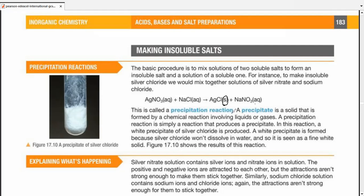We call it a precipitation reaction. A precipitate is a solid that is formed by a chemical reaction, which may involve liquids, solutions, gases, or even solids. A precipitation reaction is simply a reaction that produces a precipitate. In this reaction, what we get is a white precipitate. Silver chloride doesn't dissolve in water, so there is a white solid that is formed and slowly that settles down to the bottom of the tube.